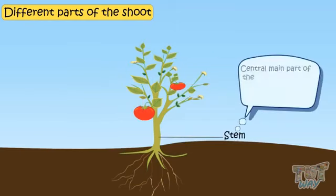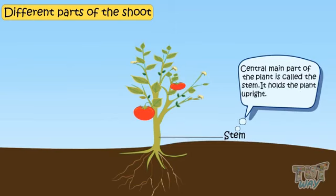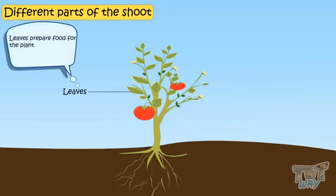Stem is the central main part of the plant. It holds the plant upright. Leaves prepare food for the plant with the process of photosynthesis and leaves are also called the food factory of plants.